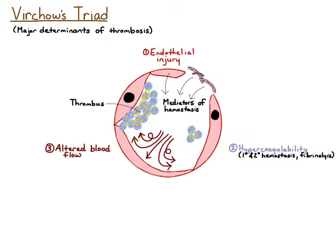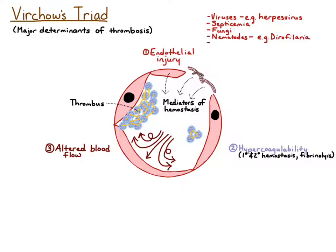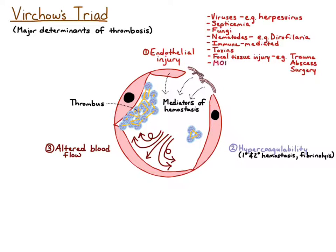There are lots of different things that can injure endothelial cells, consisting of a variety of infectious and non-infectious causes. The causes specifically covered in your courses include herpes viruses in the immunology course, Dirofilaria or heartworm disease in this course and parasitology, and septicemia in bacteriology. Those are the ones to focus on, even though there are many different causes of endothelial injury.